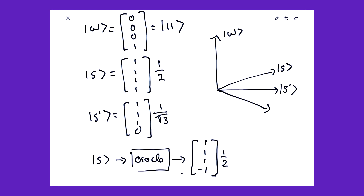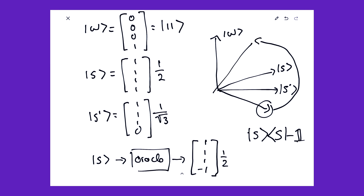Now let's apply the reflection operator, defined as 2|S><S| minus the identity. What this does is reflect our new vector about our original S vector. So we started here, went here, and ended up here — the combination of these two operators brings us closer to our winning vector W. Each time we apply these two operators, our quantum state moves closer to the winning vector. In our example of four elements, we get the correct answer after just one application of amplitude amplification. For larger systems, the number of applications scales as square root n.